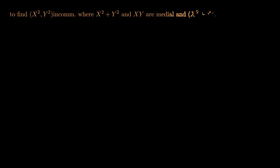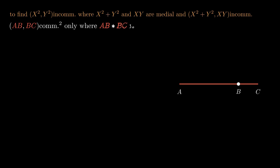In this proposition, we'll find two lines incommensurable in square whose sum of squares is medial and product is medial and incommensurable with the sum of the squares. Using Proposition 10.32, create two medial lines commensurable in square only, where ab times bc is medial and ab squared minus bc squared is equal to x squared, where x and ab are incommensurable.